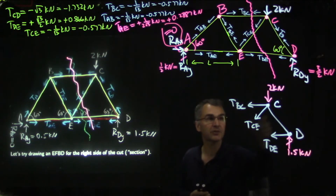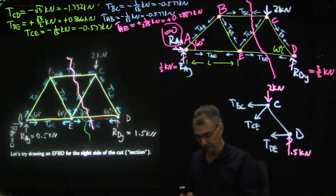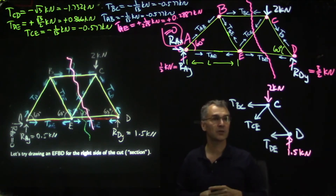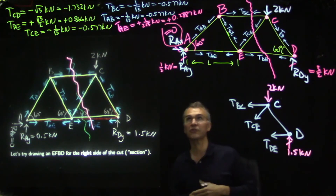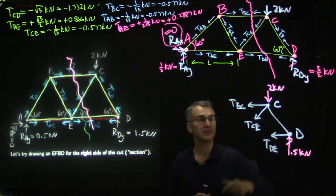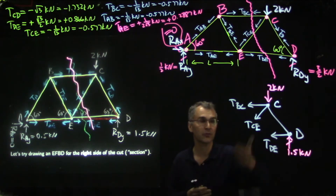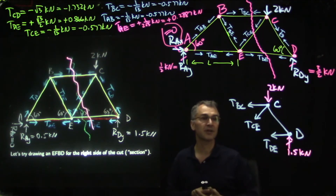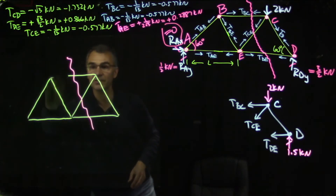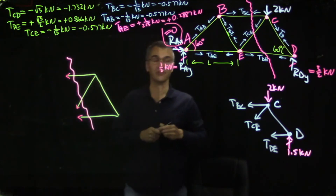Now we use the three equations for static equilibrium in the plane to solve for these three unknown forces. We should get the same answers as before, but without pages of algebra. You can now see why you can't pick more than three cut bars: we only get three equations, so we can only have three unknowns. If we pivot about joint C, we can get an equation involving only T-DE — eliminating the other two forces whose lines of action pass through C.